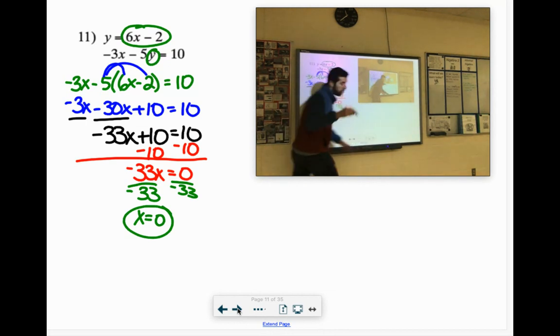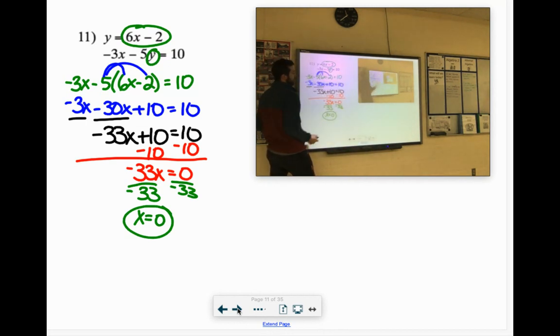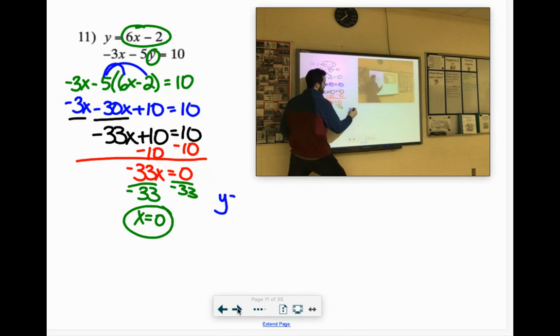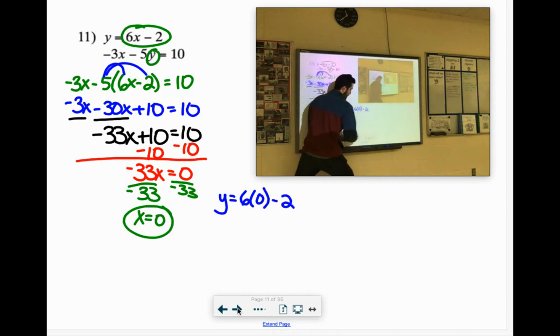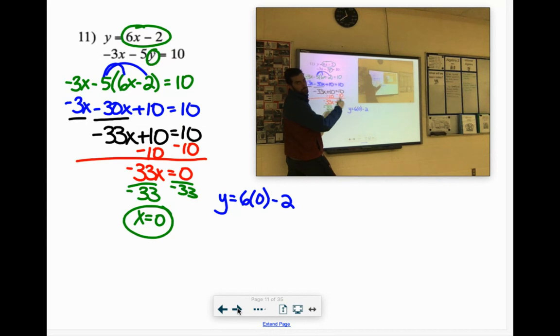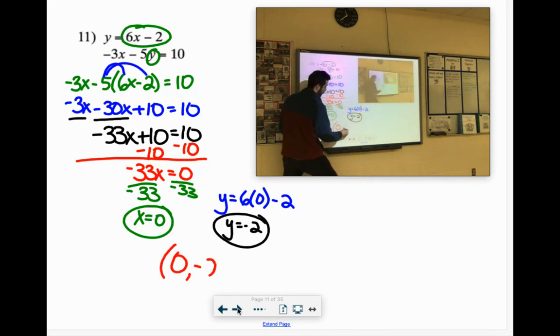We still need to figure out y, though. I'm going to go with the first equation. y equals 6x, and x is 0, minus 2. Okay? No. 6 times 0 is 0. Minus 2 is negative 2. We need to know our coordinate here. x was 0. y was negative 2.